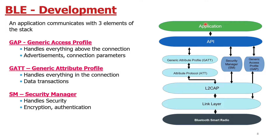This is the basic Bluetooth stack. At the top we have the application layer, and at the bottom we have the Bluetooth Smart radio. We have an API used to communicate between the Bluetooth radio and the application. We also have GATT — the Generic Attribute Profile — and L2CAP, and a link layer. Apart from this, we have a Security Manager and a Generic Access Profile, which is used for connections.